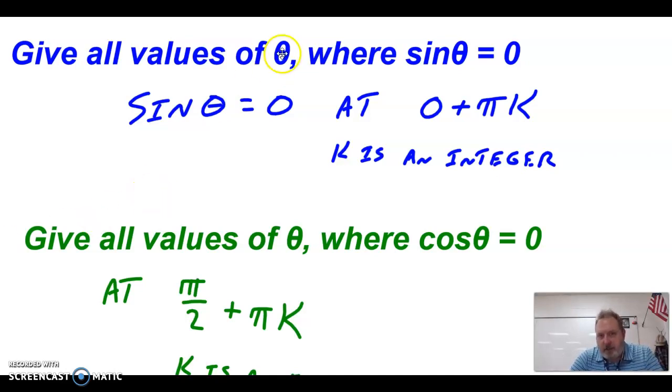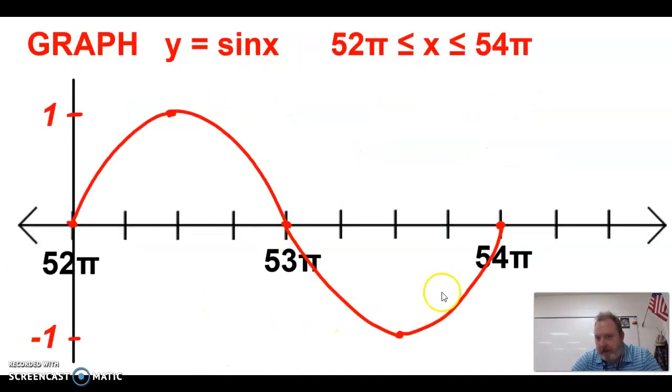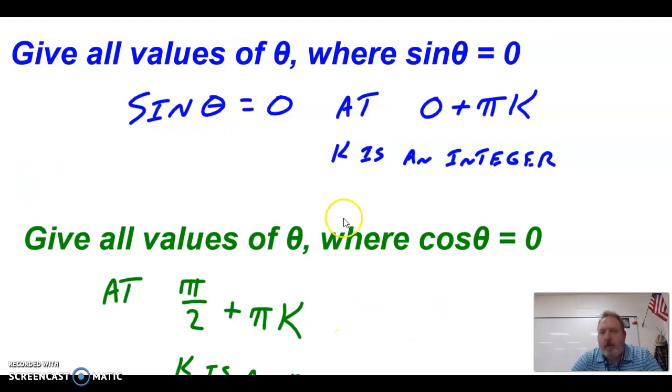All right, this particular question says to give all sine values of theta where sine is 0. Now we know that happens at 0, but again, it happens at π, 2π, 3π, 4π, 52π, 53π, right? So all these graphs show. Well, we don't want to have to write all of those. We want to have a way to do that that is short and concise. So the way we say that, the first one's at 0, and then we can add or subtract π times k, where k is an integer. So we can add 1π, we can subtract 1π, add 2π, subtract 2π. It doesn't matter. Every time we hit a value of π, sine is 0.